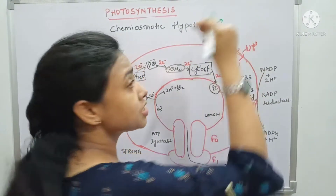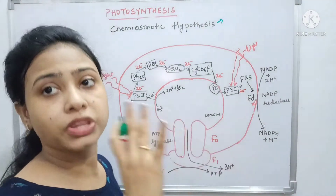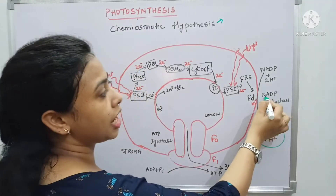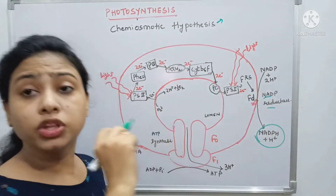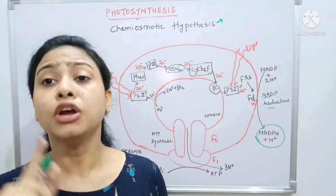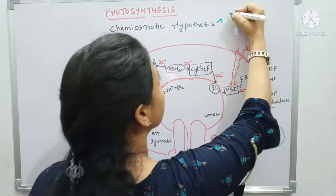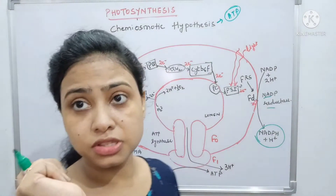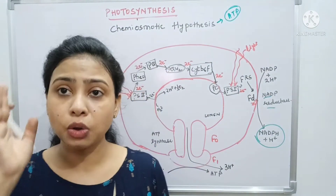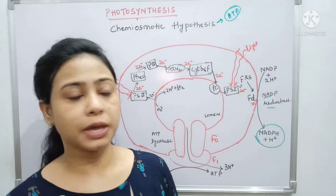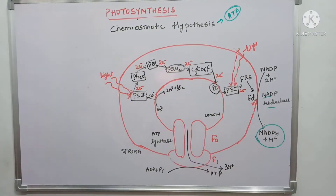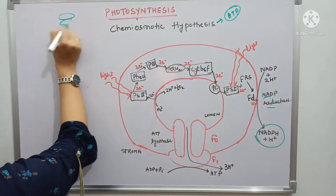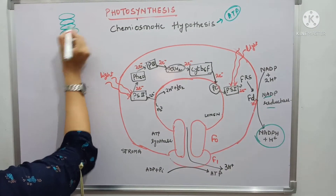In the non-cyclic process, NADPH is already formed with the help of NADP reductase. Now it is time for the formation of ATP. ATP formation is explained by the chemiosmotic hypothesis — this hypothesis explains how ATP gets formed. First of all, let me show you the structure of a thylakoid. This is the grana.